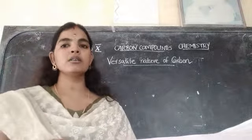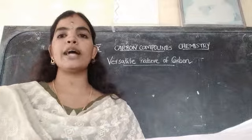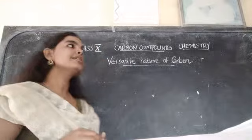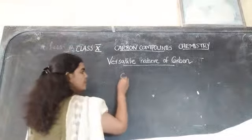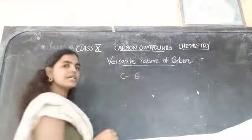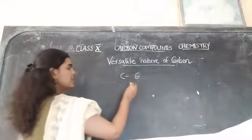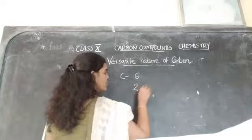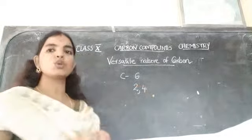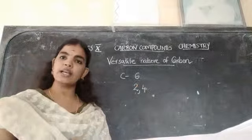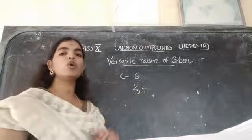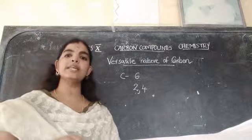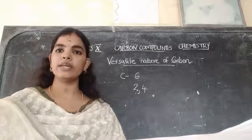Before that, what is the atomic number of carbon? The atomic number of carbon is 6. So what is the electronic configuration? The electronic configuration is 2, 4 — in the first shell it has 2 electrons and in the second shell it has 4 electrons. So 4 is the valence electron as well as the valency of the carbon atom.